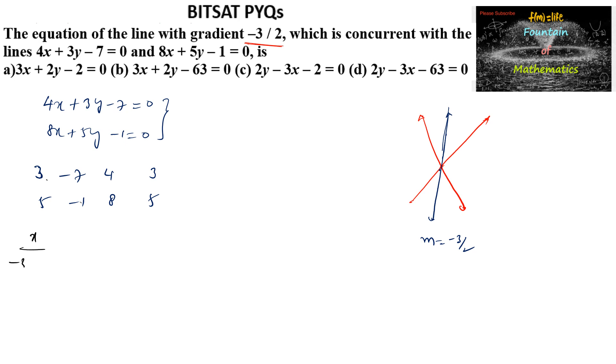x upon minus 3 plus 35 is equal to y upon minus 56 plus 4 is equal to 1 upon 20 minus 24. So we can write x upon 32 is equal to y upon minus 52 is equal to 1 upon negative 4.